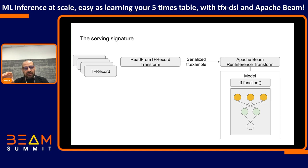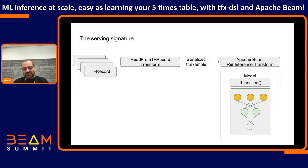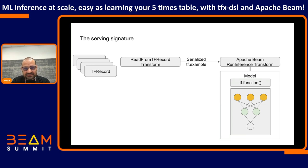Those TF examples are serialized as strings, but the input layer expects a float. To convert between the two, we can use TensorFlow serving signatures — an advanced feature of TensorFlow. You can apply a function to the data coming to the model before that first layer. This is probably the most complex bit of the whole demo, but it's actually a small amount of code. Serving signatures have other uses as well.